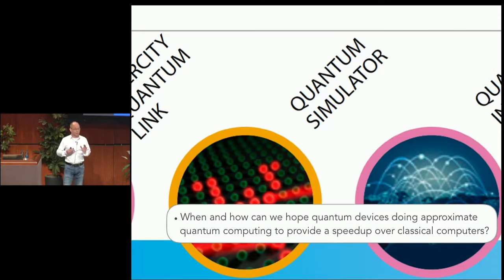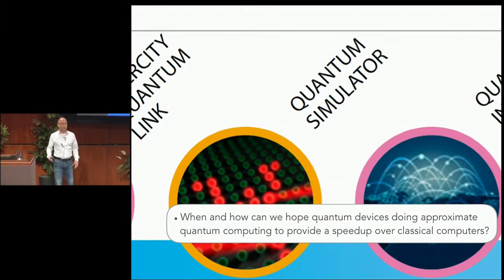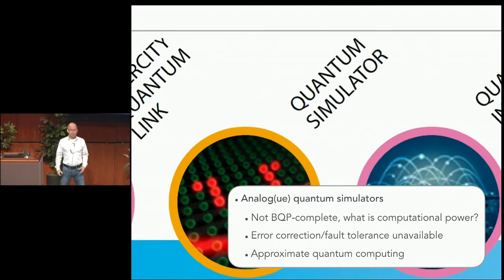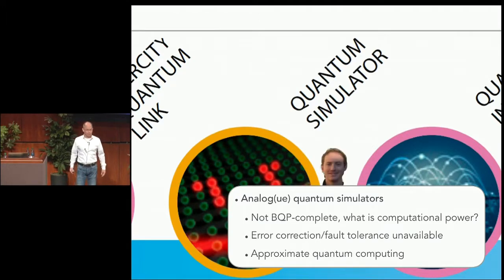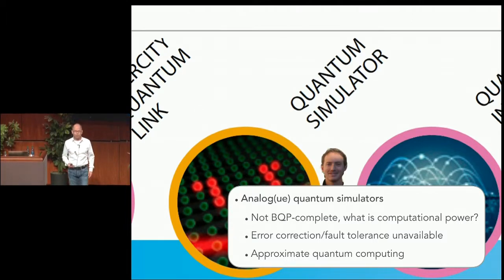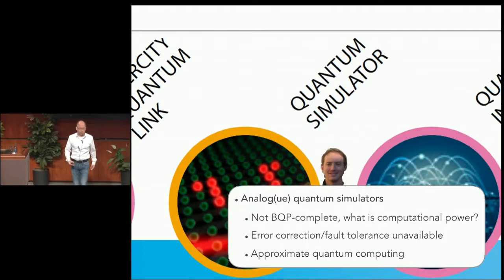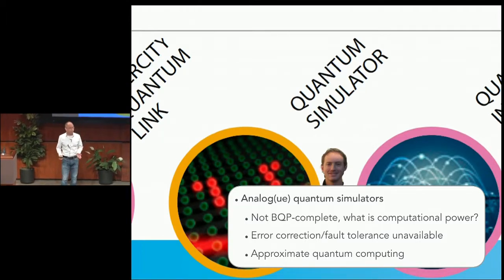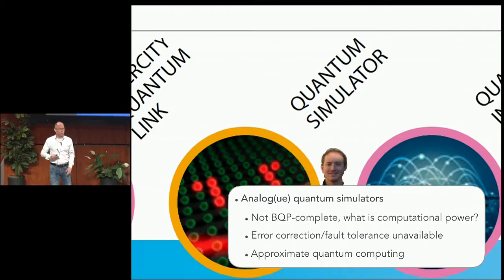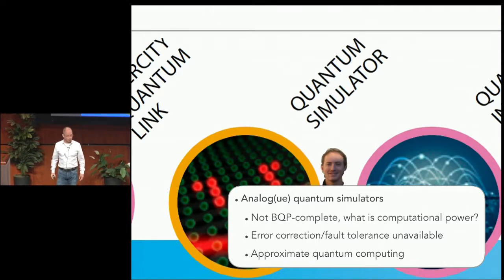There's one thing — quantum simulators are large, so the asymptotic limit is, in a way, inbuilt. They're the dirty and ugly brothers of quantum computers, if you want. But then new questions pop up. These analog quantum simulators — they simulate themselves in a way. They're surely not BQP complete. So what is their precise computational power? Error correction, let alone fault tolerance, is unavailable. So is this a bug or a feature? Is this just drowned by noise, or is there some hope for some robustness, or at least some spatial or time window where one can hope to do something interesting?